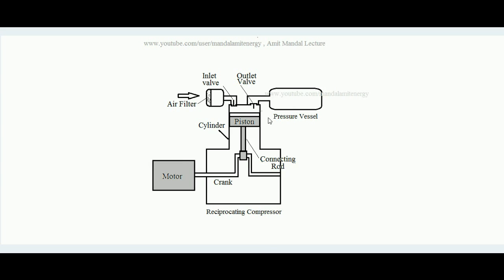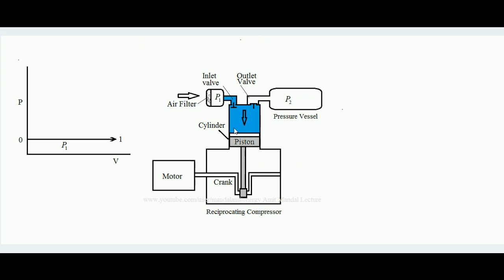Now let's understand its working. The reciprocating compressor has two strokes: suction and compression. Suppose the piston is at the top dead center and moves downward toward the bottom dead center — the inside pressure drops, so the inlet valve rises up from its seat and opens inward. Since it is a non-return valve, it opens automatically when the inside pressure goes low, allowing the piston to pull air in from the atmosphere through the air filter.